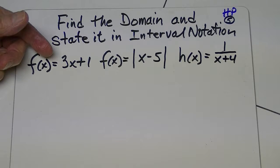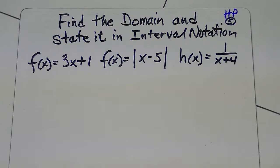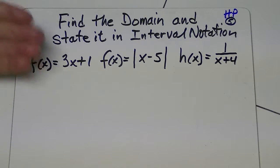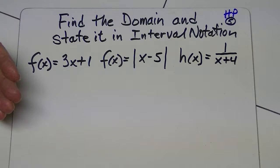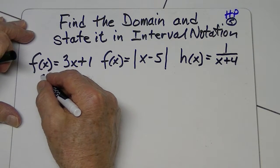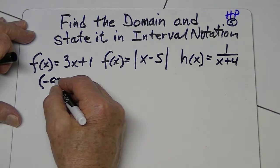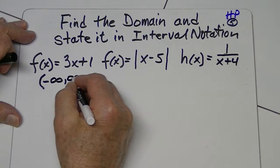In this first case, no matter what value we put for the x, it will never result in a denominator that's zero. So for this first one, the domain is all real numbers and in interval notation, we put it from negative infinity to positive infinity.